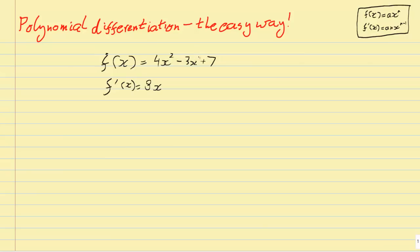Remember here the power of x is 1, so negative 3 times 1 is negative 3. And then x to the power of 1, that drops down by 1 to 0, and x to the power of 0 is 1. So this is really negative 3 times 1.